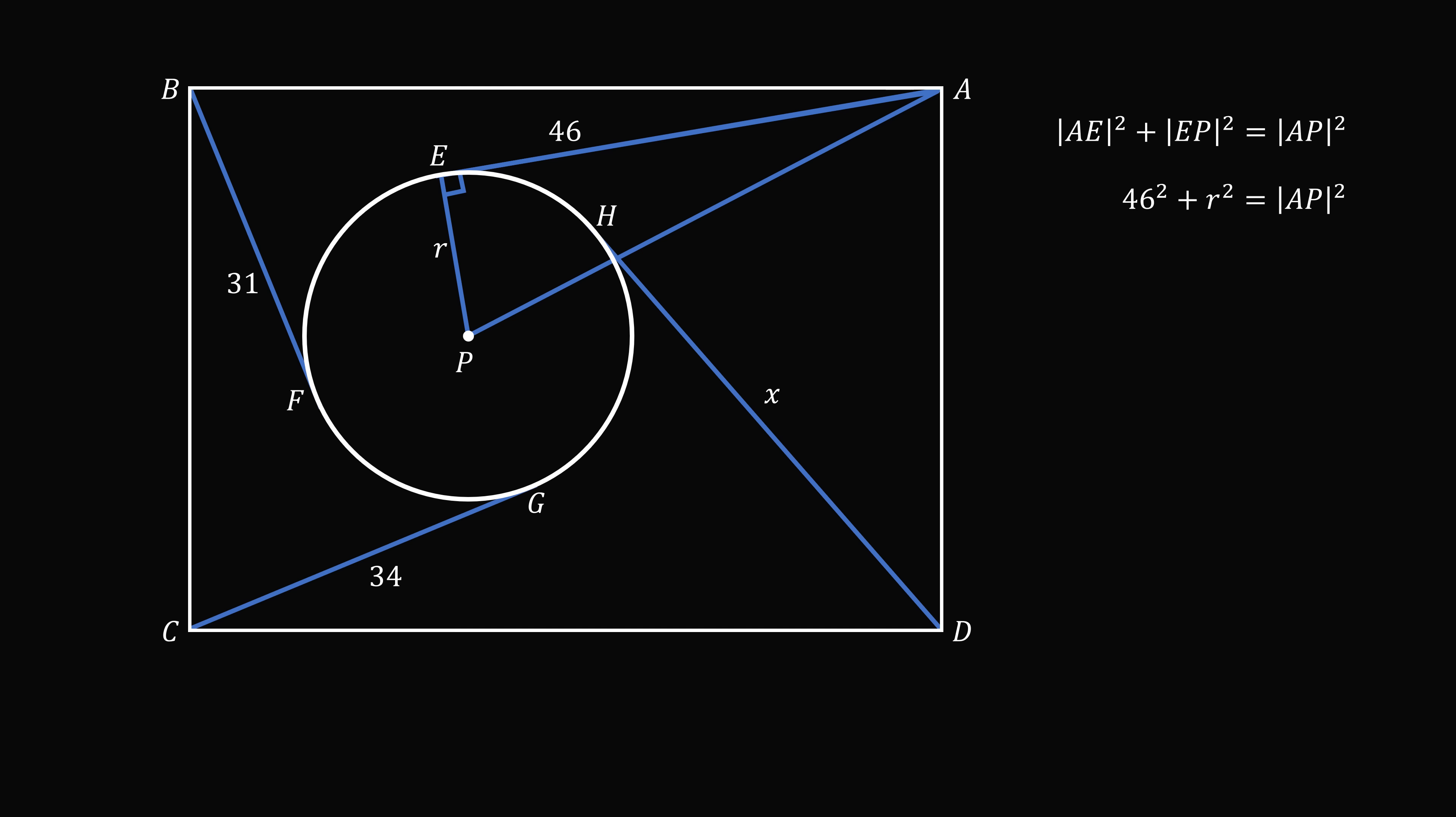Let's do a similar construction for the remaining three tangent lines. Construct the triangle BFP. Since BF is a tangent to the circle, BF is perpendicular to FP. FP is the radius of the circle, so its length is equal to R. So in this right triangle, we have 31 squared plus R squared is equal to BP squared.